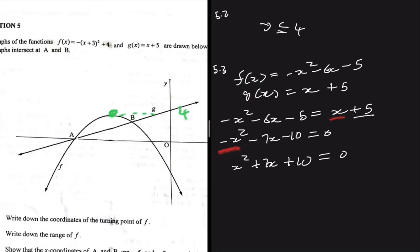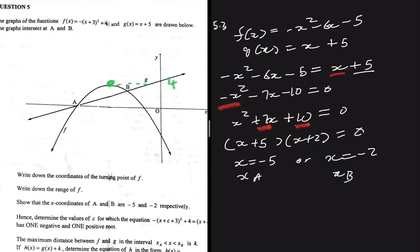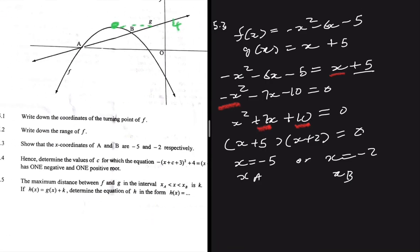Now it looks clean and I can go ahead and factorize. I'm asking myself: which two numbers multiply to give 10 and add to give 7? That is 5 and 2. So I get (x + 5)(x + 2) = 0, meaning x = -5 or x = -2. This is the x-value of A and this is the x-value of B. It's quite straightforward — unlike 5.4 and 5.5.